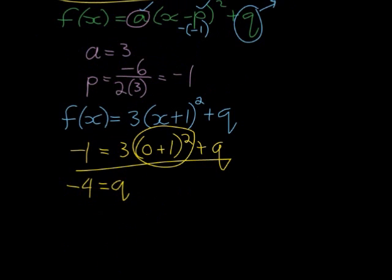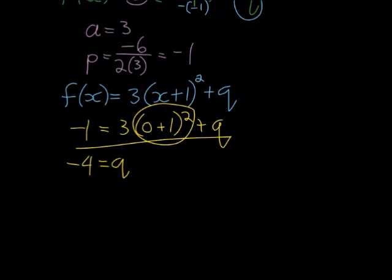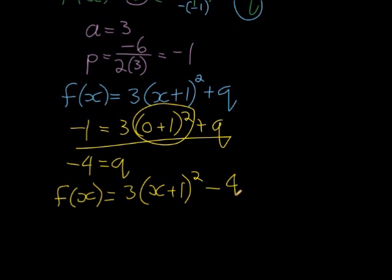And if we put all of this together now, we find that f(x) is equal to 3(x plus 1) squared minus 4. And there we go.